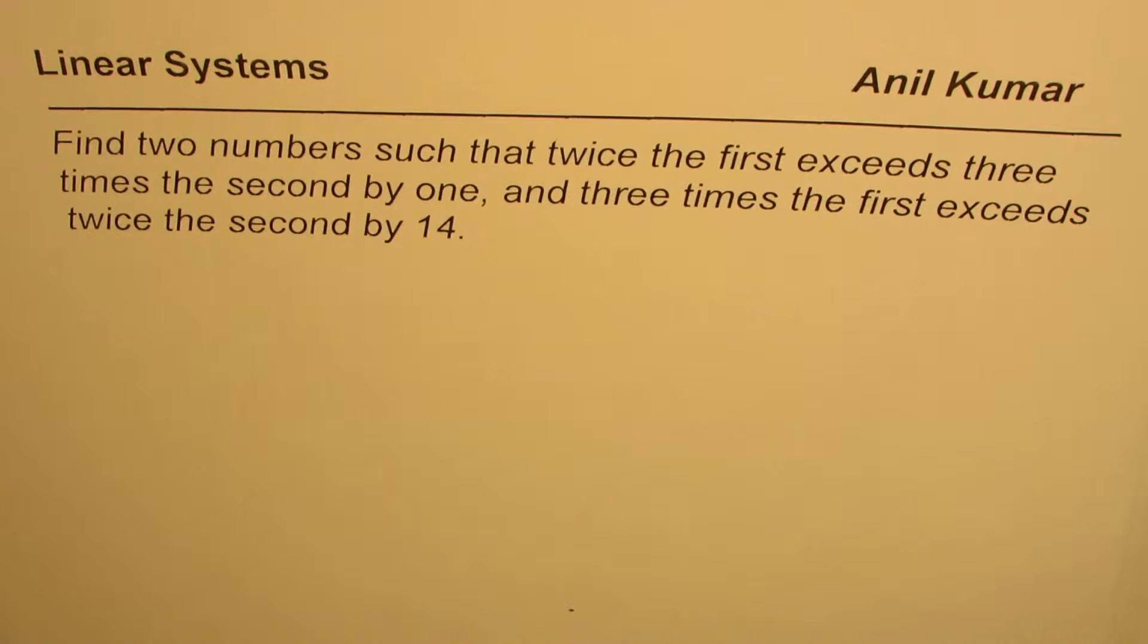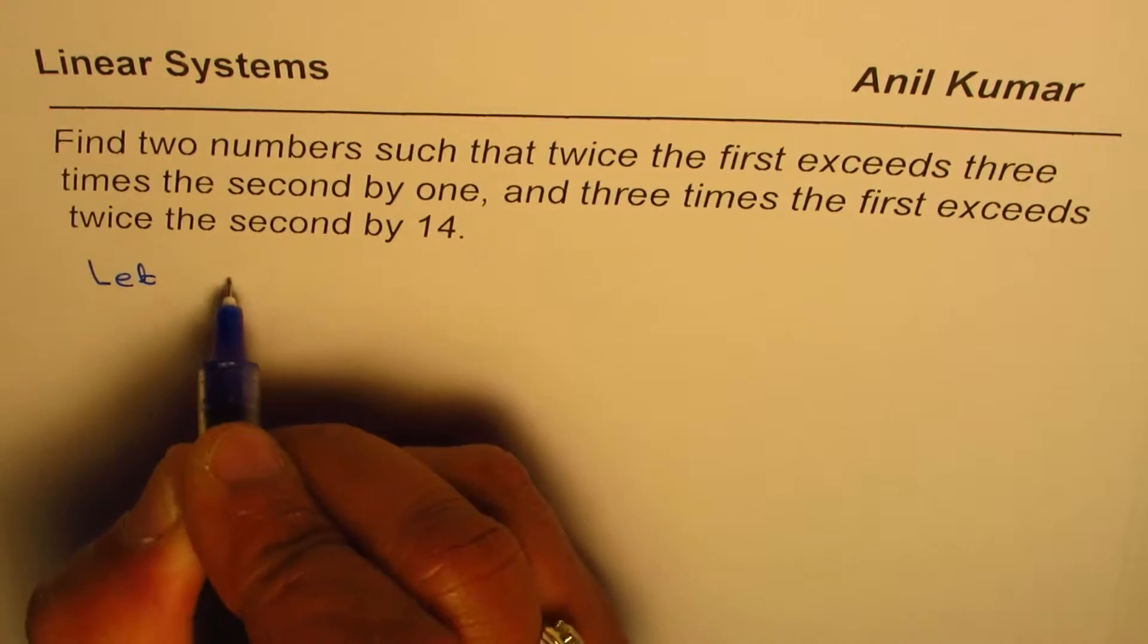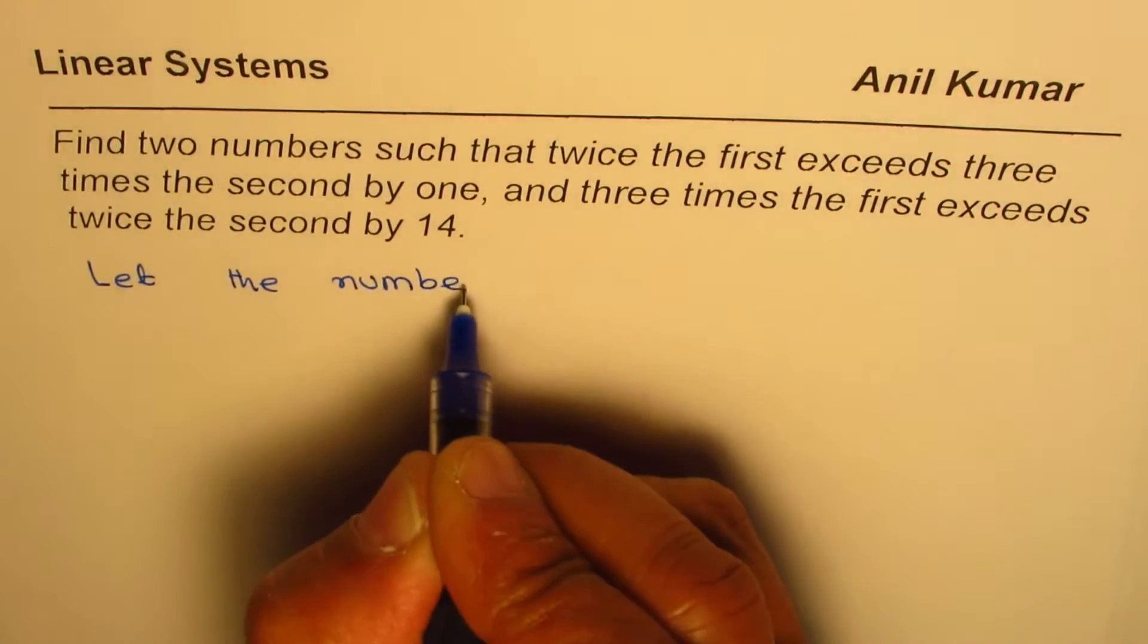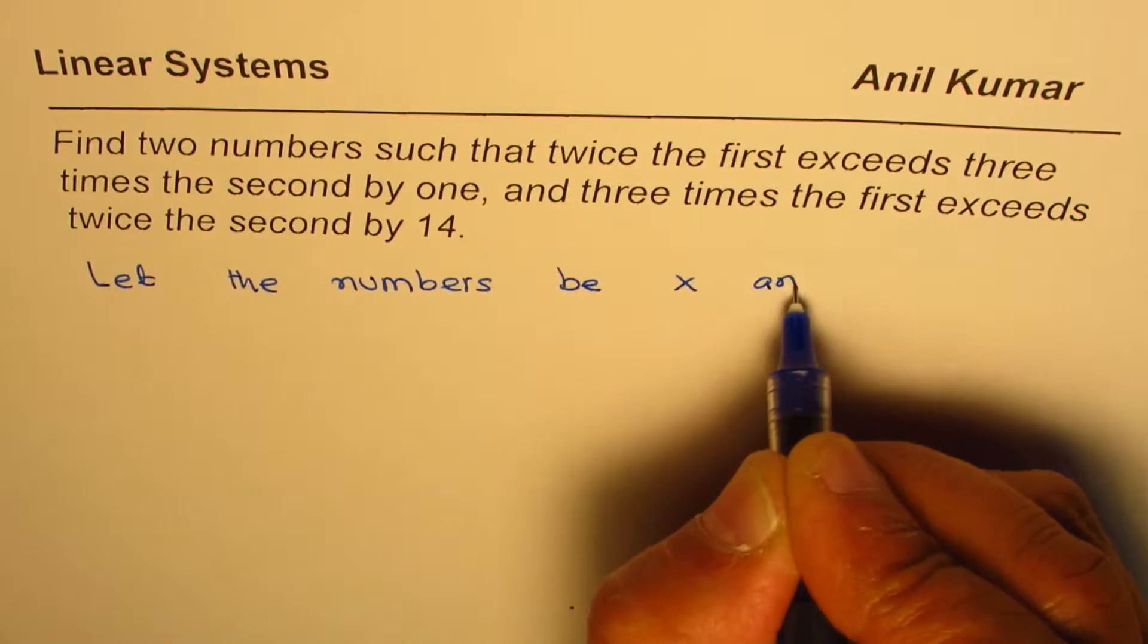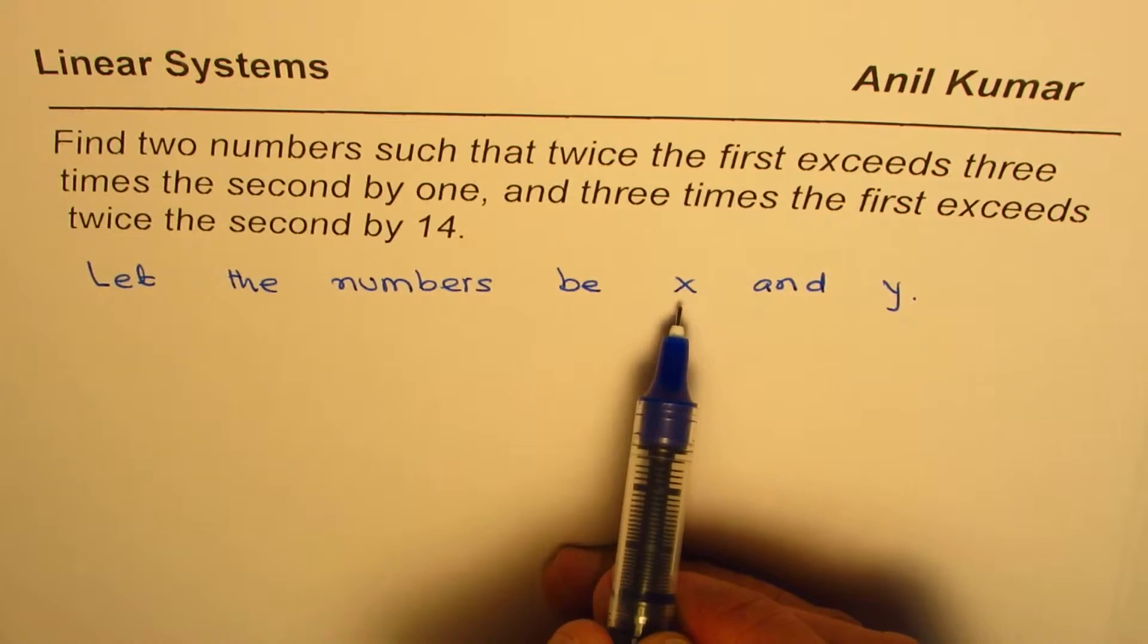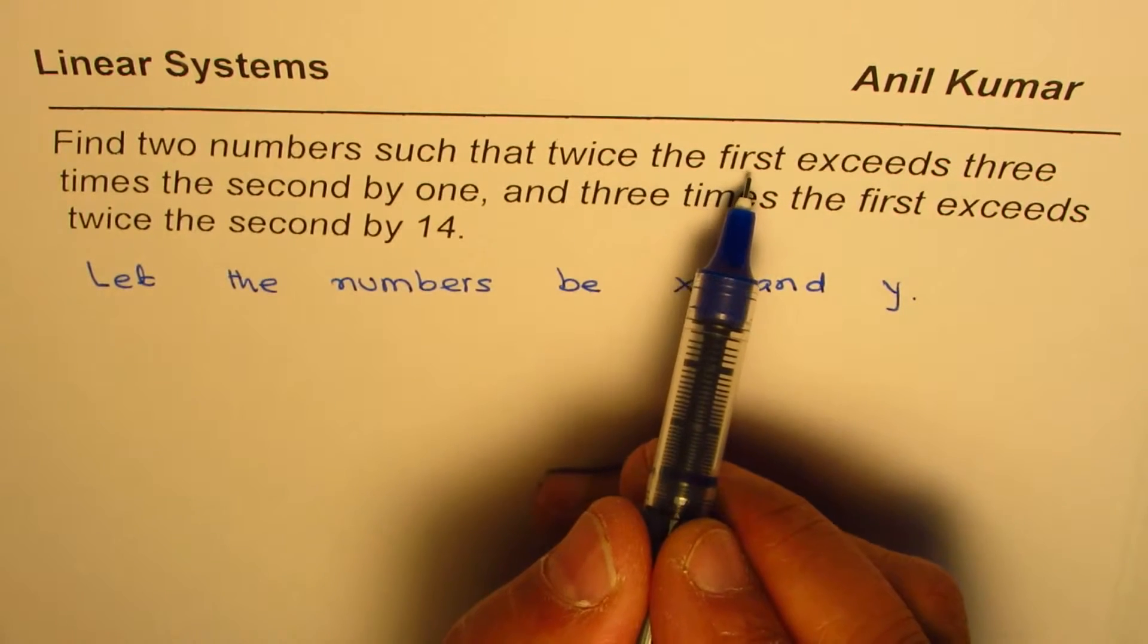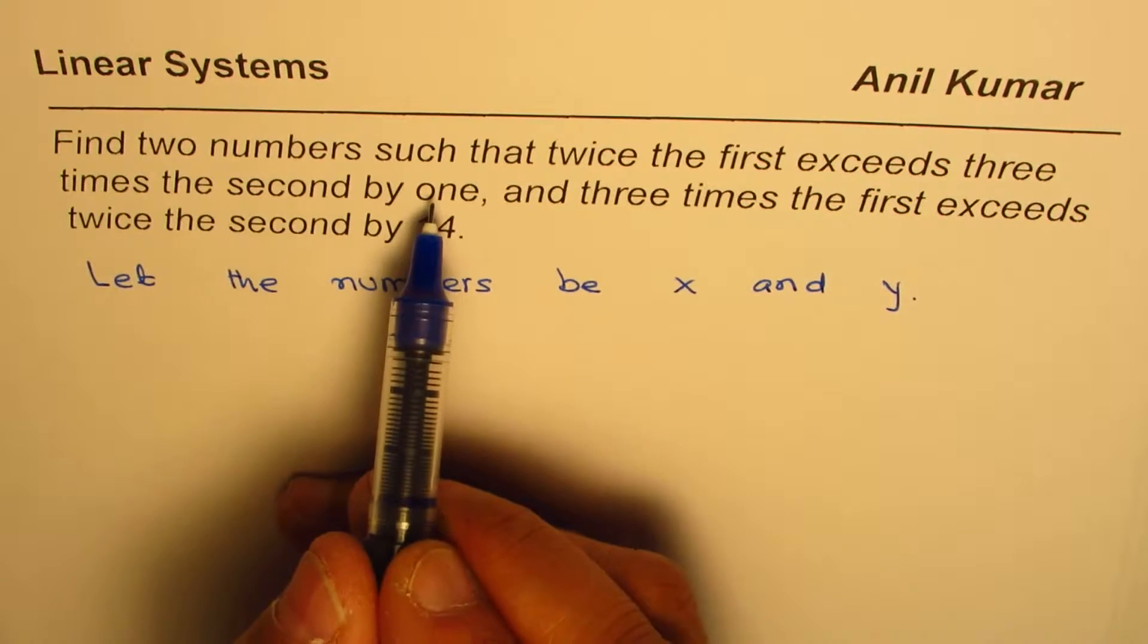That's the question. First, we write a let statement. Let the numbers be x and y. Now let's read the statement: find two numbers. We have assigned variables x and y such that twice the first exceeds three times the second by one.